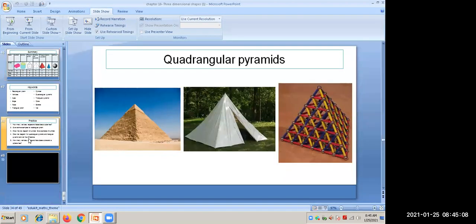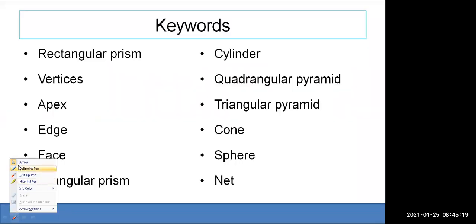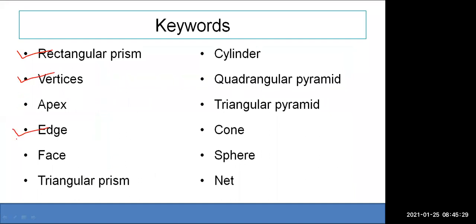Today we have seen: rectangular prism, triangular prism, cube, cuboid, cylinder — their vertices, edges, and faces. We also learned what a net is: when you open a 3D object into a 2D flat form, you get its net.